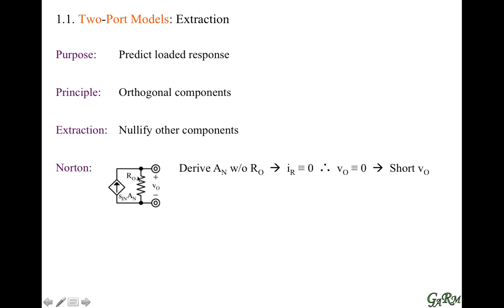When we derive the output resistance, we need to nullify the effects of the current source. We look at the signal that controls that current source — in this case, it's the input signal — and we need to make sure that input signal is zero.